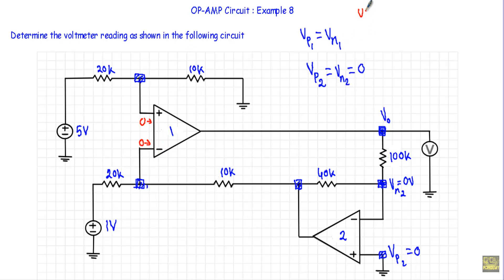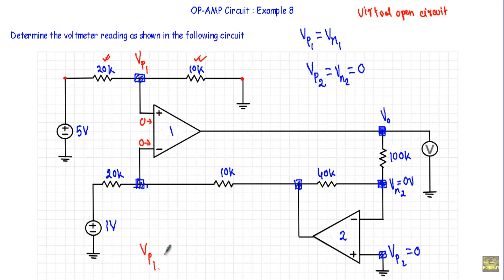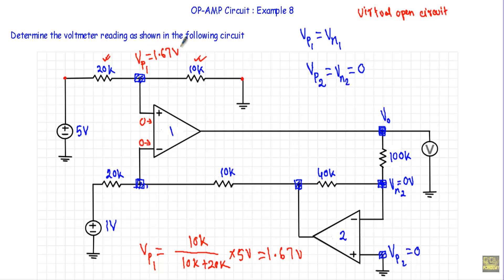Due to negative feedback, the current into the inverting and non-inverting terminals will be zero — the inverting terminal acts like a virtual open circuit. The 5 volts is applied between this terminal and ground, and since there is no current flow in this direction, the 5 volts will be divided across the 20 kΩ and 10 kΩ resistors. The voltage across the 10 kΩ resistor gives us Vp1, calculated using the voltage divider rule: Vp1 = (10k / (10k + 20k)) × 5V = 1.67 volts.